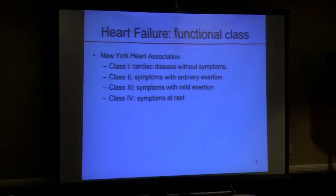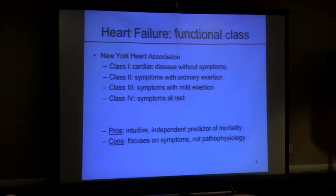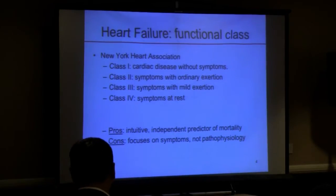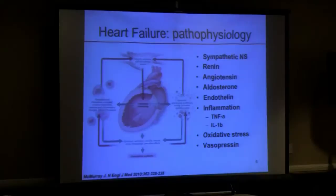For decades we've used the New York Heart Association class to help us in management of patients. This classification is quite intuitive and useful because it has prognostic value — class 1 is asymptomatic, class 4 has severe symptoms at rest, with 2 and 3 in between. The con is that about a decade ago the heart failure community started saying this really focuses on symptoms and not the pathophysiology, so how can we turn this around and focus on pathophysiology?